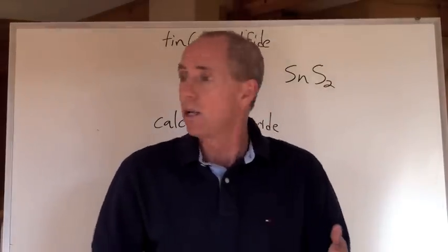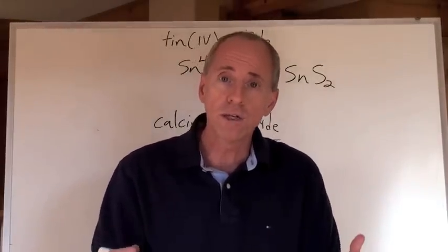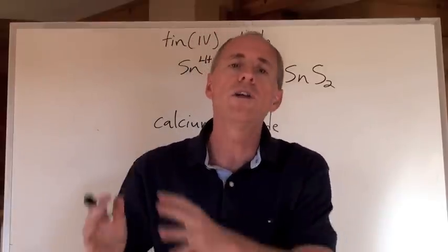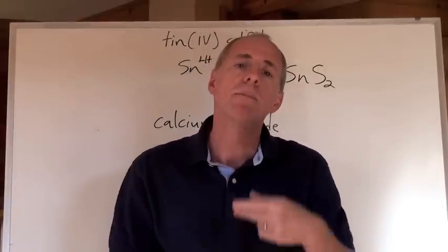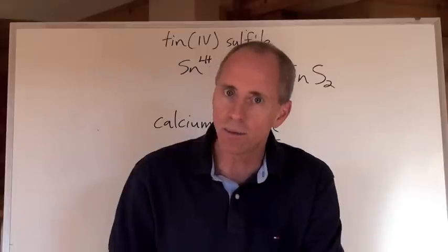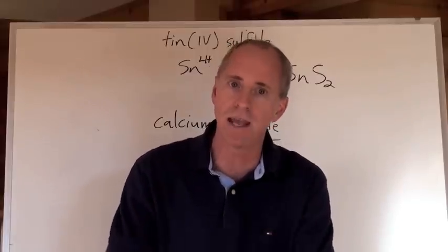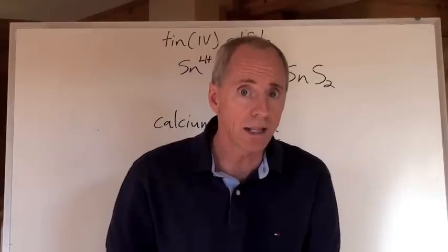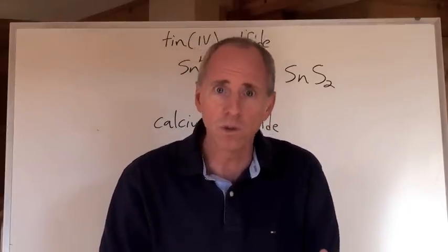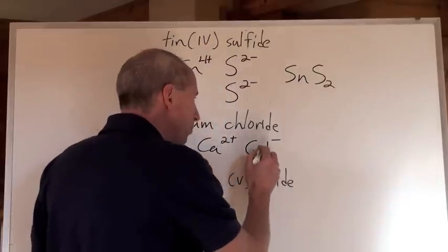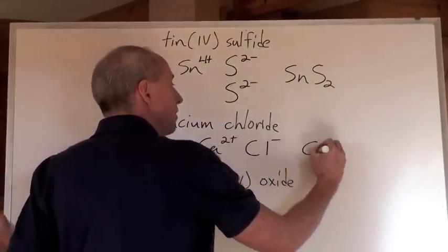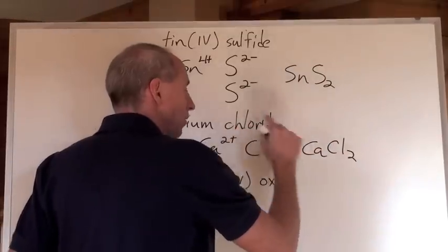Some people say, you just said that chlorine when it's by itself is Cl2 because it's diatomic. Yeah, when chlorine is a gas it's Cl2. But when chloride ion is bonding, drop all that diatomic stuff and just use the charge on the table. Don't get fooled here—it's just Cl with a -1 charge. How many of those do you need? Two of those for every one of those. CaCl2 is calcium chloride.